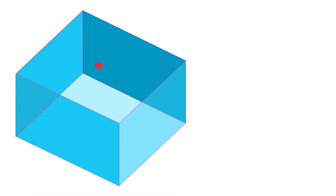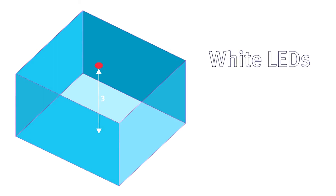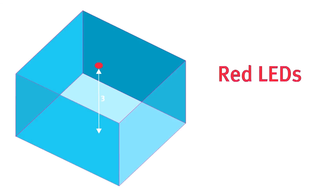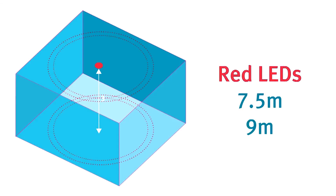Both devices have the capability of variable coverage volumes, and this helps simplify the range. For the ceiling beacons, these volume coverages are all based on a maximum ceiling height of 3 metres. So subject to control panel compatibility, you can set the coverage of a white LED beacon to 5, 7.5 or 10 metres diameter. For red LED beacons, this coverage could be set to 7.5 or 9 metres diameter.